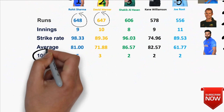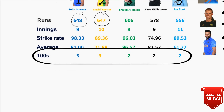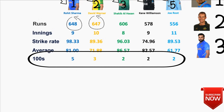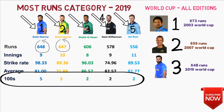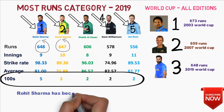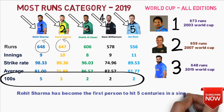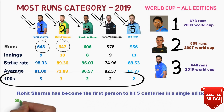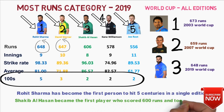Looking at the most hundreds category, the top 5 list in this 2019 edition goes in the same order as most runs. After the 2019 World Cup, Rohit Sharma has become the first person to hit 5 centuries in a single edition of the World Cup. Shakib Al Hasan also became the first player in World Cup history to score 600 runs and take 10 wickets.